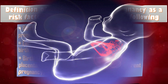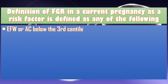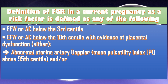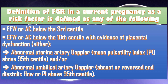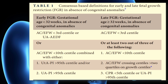The definition of fetal growth restriction in a current pregnancy as a risk factor includes any of the following: estimated fetal weight or abdominal circumference below the 3rd centile; or estimated fetal weight or abdominal circumference below the 10th centile with evidence of placental dysfunction, either abnormal uterine artery Doppler with mean pulsatility index above the 95th centile, and/or abnormal umbilical artery Doppler meaning absent or reversed end-diastolic flow or pulsatility index above the 95th centile. Table one in the guideline shows the consensus-based definition for early and late fetal growth restriction in the absence of congenital anomalies.